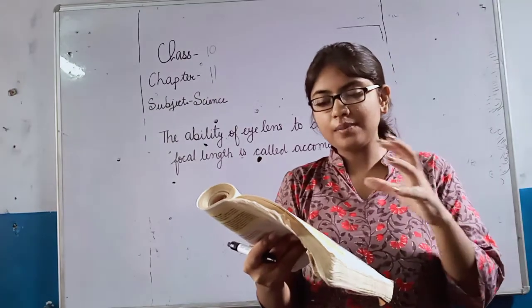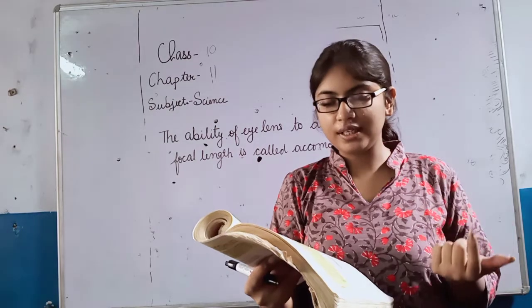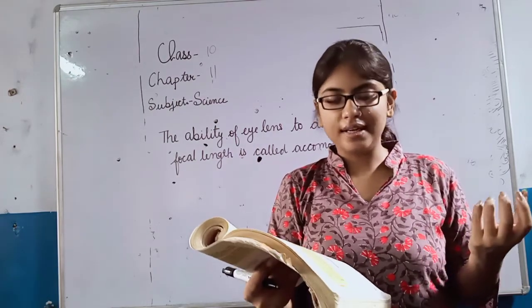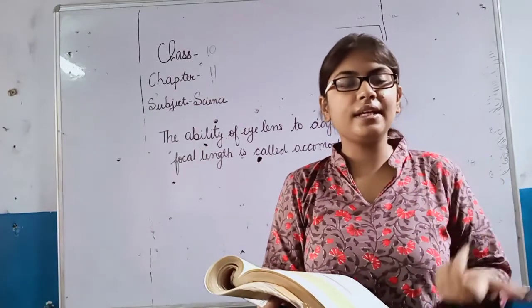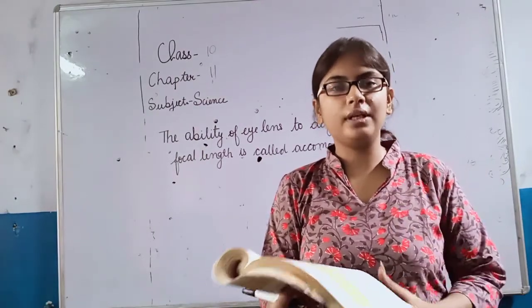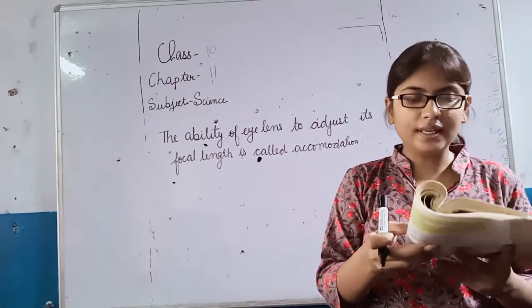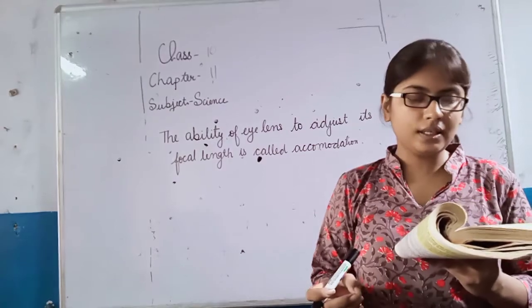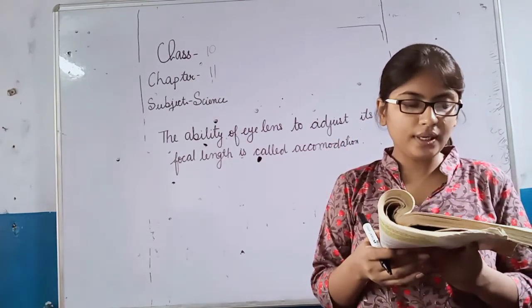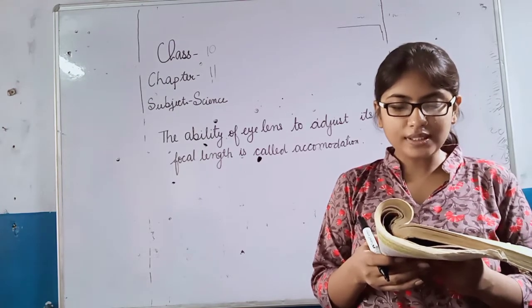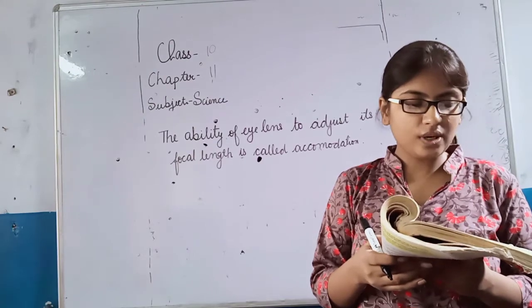When the ciliary muscles contract, the curvature of the lens increases, the lens becomes thick, and the focal length decreases. However, the focal length of the lens cannot be decreased below a certain minimum limit. Try to read a printed page by holding it very close to your eyes.